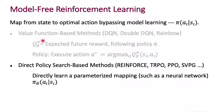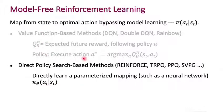Another major class of methods within model-free RL is called direct policy search. In direct policy search, we sidestep even the step of learning a Q function. Not only do we not learn a model, we don't even learn a Q function. We instead learn directly a parametrized mapping from states to actions. In the value function-based methods, we learn the Q function and then execute an action A* equals argmax. In DDPG we still had a Q function, but in direct policy search-based methods, we just directly learn a policy.